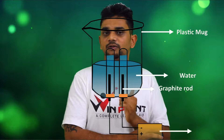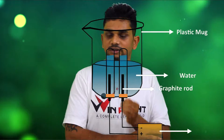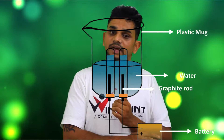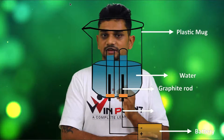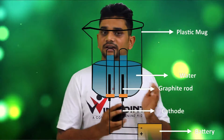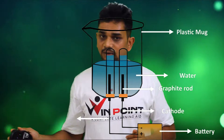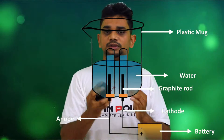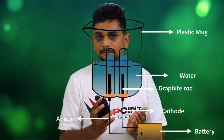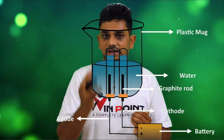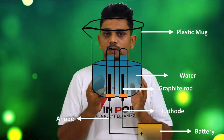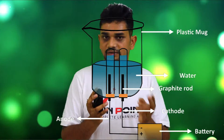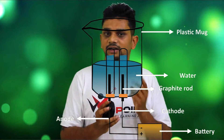The positive terminal of the battery is connected to the anode, and the negative terminal of the battery is connected to the cathode. So we can see here, one is cathode and the other one is anode. When electricity is passing through this water, the water is going to split into two products, hydrogen and oxygen.